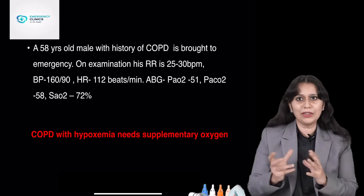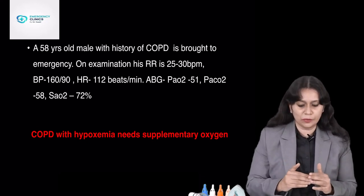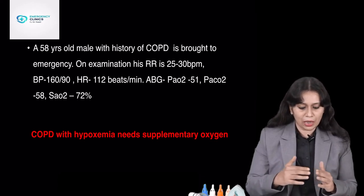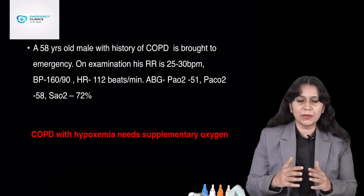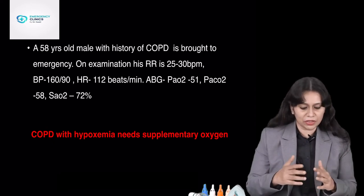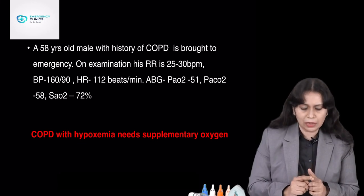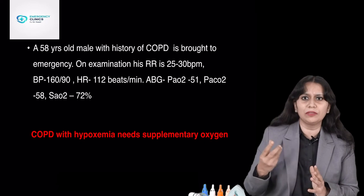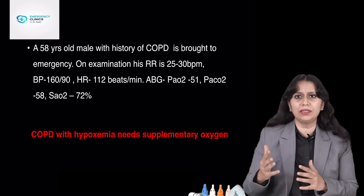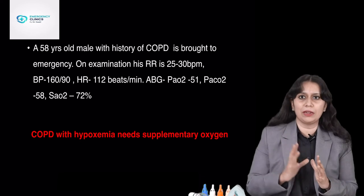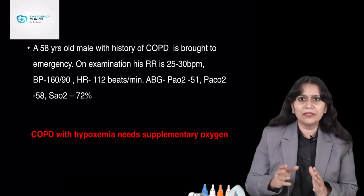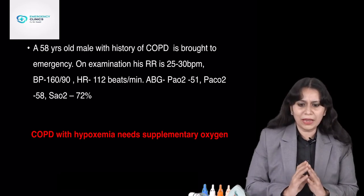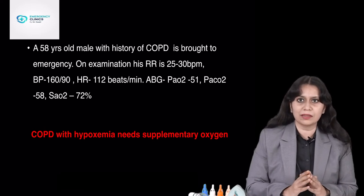One more important device with a case scenario: a 58-year-old male with history of COPD brought to emergency. Respiratory rate 25 to 30 breaths per minute, BP 160/90, heart rate 112 beats per minute. ABG showed PaO2 51 mmHg, PaCO2 58 mmHg, saturation 72%. Patient is hypoxemic and requires supplemental oxygen, but we don't want to take away the hypoxic drive. So we have to precisely control the FiO2 to deliver the required oxygen concentration without eliminating the respiratory drive — best device would be the Venturi mask, or Venti mask.